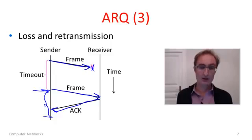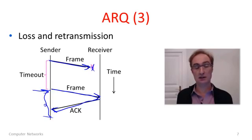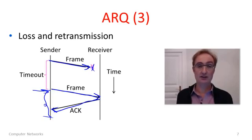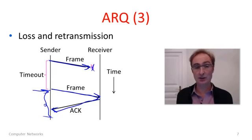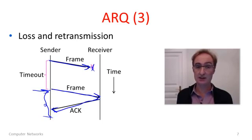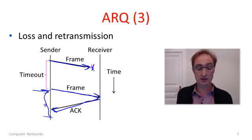You can also see why ARQ has the sender automatically resend a message rather than having the receiver request it. If the receiver didn't hear something, it's in no position to request it again — it doesn't even know it's missing a message. And even if it did, the ACK is just another frame that could get lost, so the sender might not hear the message to resend.